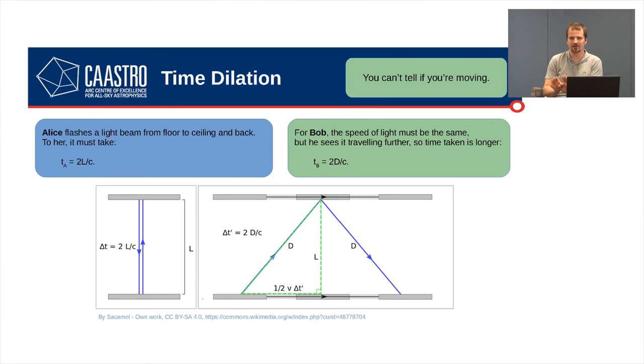But again, Bob is watching from the platform. And as he's watching, the train is moving from left to right. When Alice releases the flash of light, the train is in that first position, on the left of the second diagram. And by the time it hits the top mirror, the train is moved to the right a bit. And then by the time it hits the bottom detector, it's moved to the right a bit more. So, the light's actually travelled in a diagonal path. So, we can actually figure out what that length D is. The light has travelled a distance of 2D. And again, it's going the same rate, C.